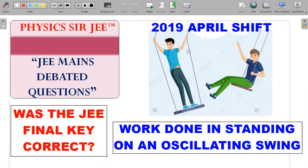Here we are in JEE Mains debated question series once again. In the 2019 April shift paper, there was a problem on a person who is on a swinging pendulum kind of motion, and suddenly he decides to stand up. There is an energy analysis asked in this particular question.